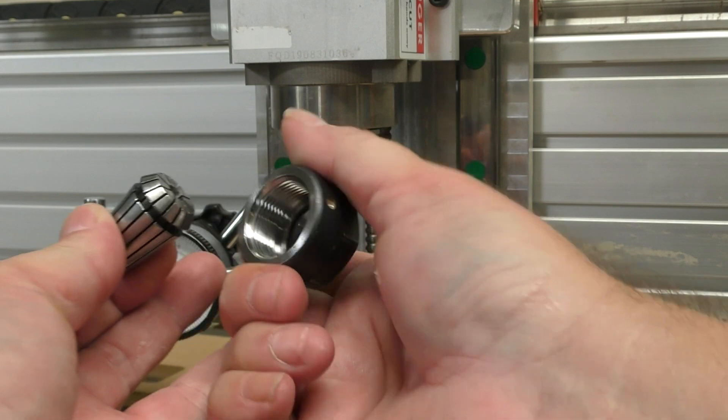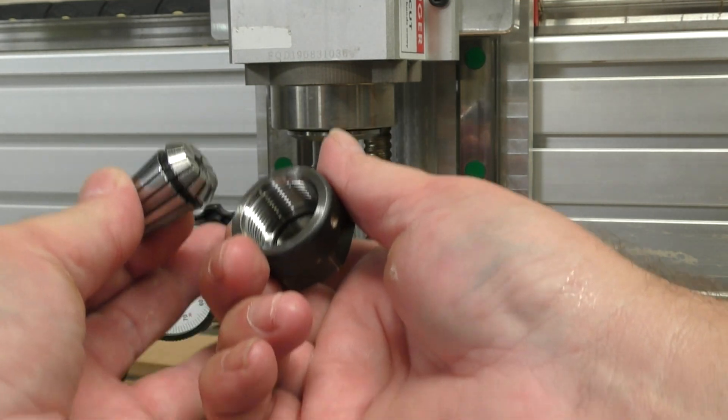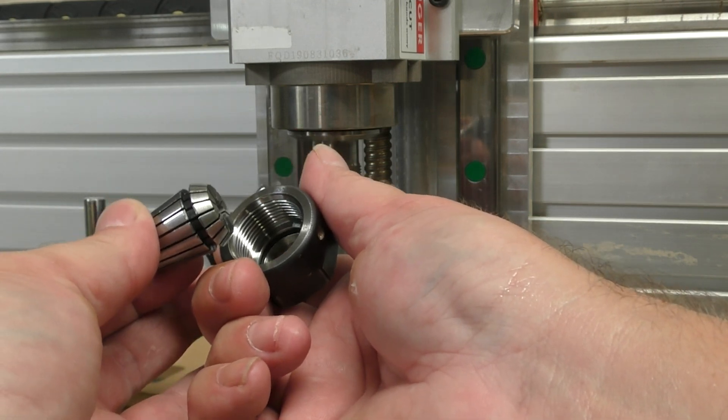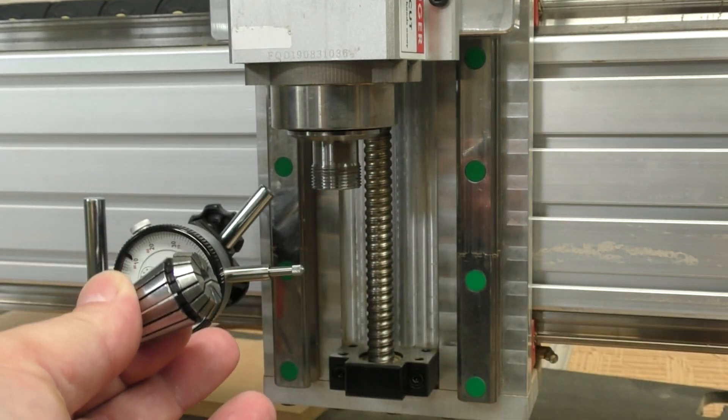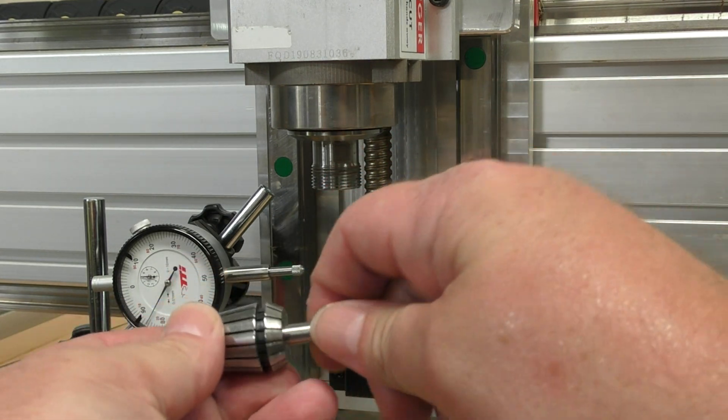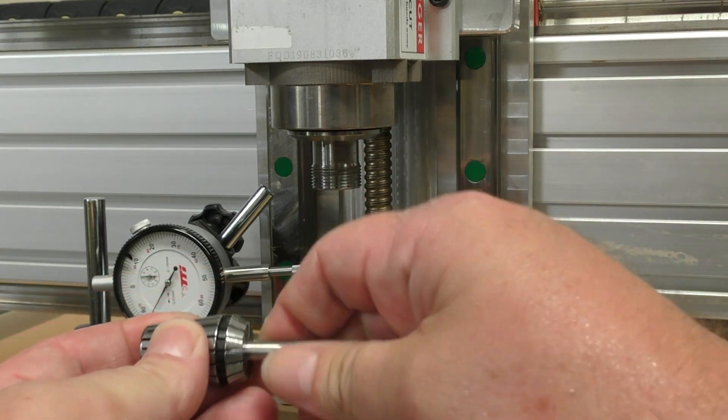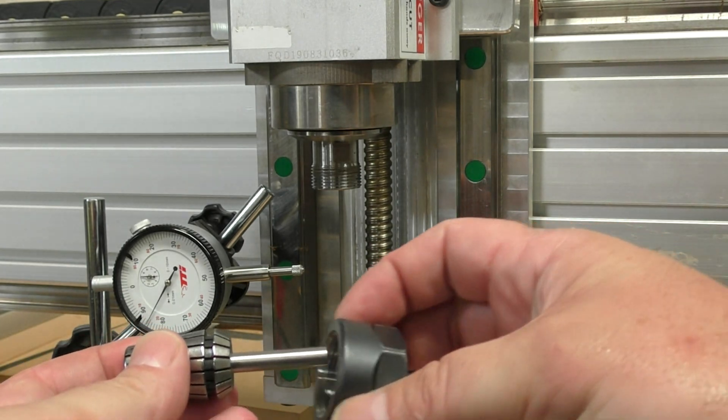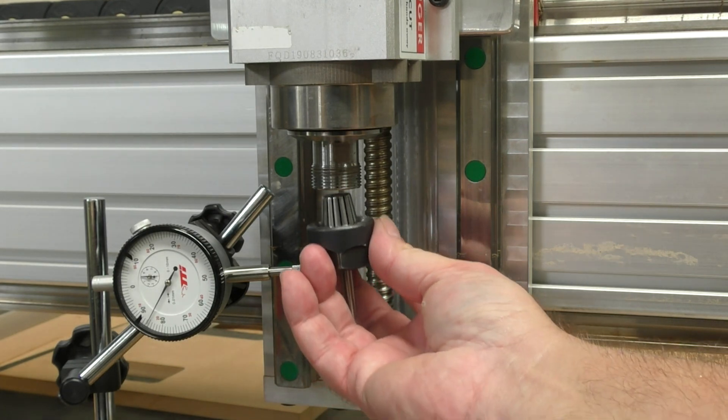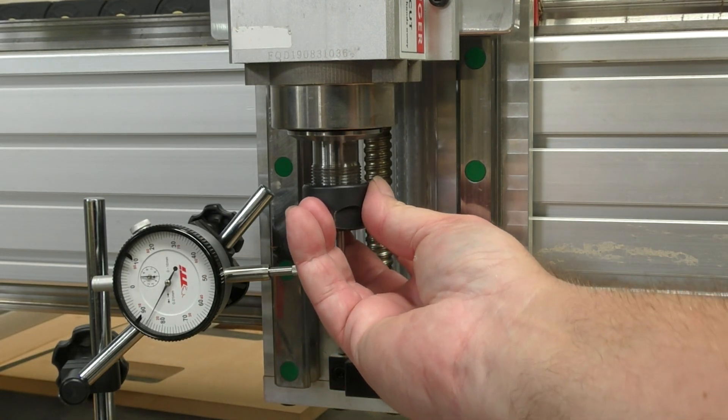Now let's do the way that a lot of people seem to actually use these collets. What they would normally do is take their tool, insert it into the collet to the length that they basically want to have it at, rest it inside this actual collet nut, and then go ahead and insert it. Let's do that now.